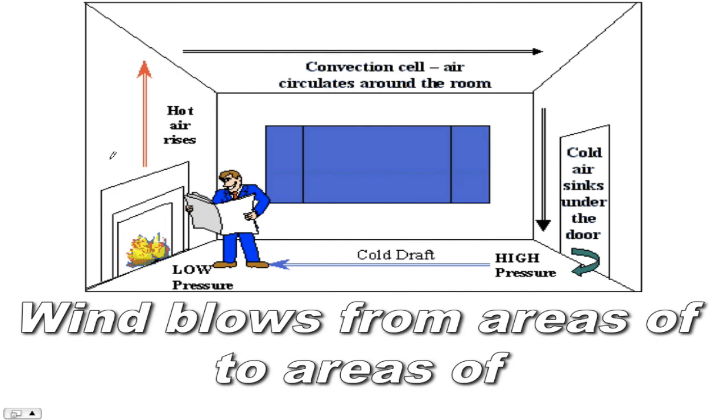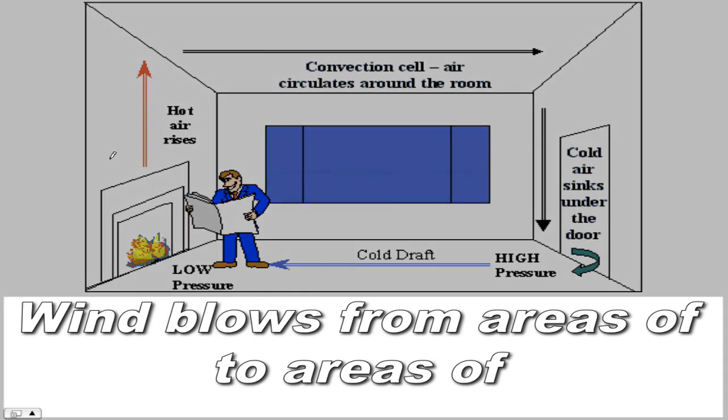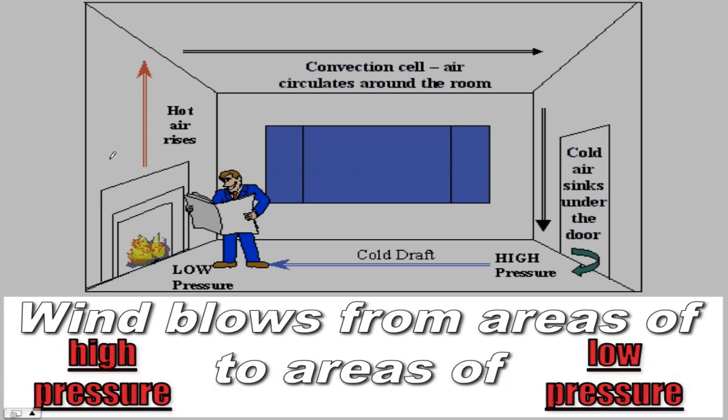Alright, now we're getting somewhere. This slide has one of the most important pieces of information that you're going to need to know. Right now, we know what causes wind, we know how to name it, but what direction does wind always travel? And I'm not talking north, south, east, west. Remember, wind is just nature's way of evening out pressure differences. So wind always, always travels from areas of high pressure to areas of low pressure.